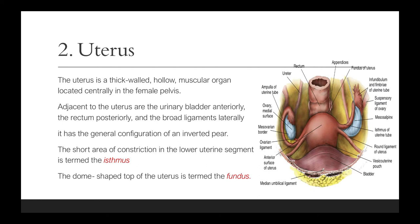Next, we have the uterus. The uterus is a thick-walled, hollow, muscular organ located centrally in the female pelvis. Adjacent to the uterus is the urinary bladder anteriorly, the rectum posteriorly, and the broad ligaments laterally. It has the general configuration of an inverted pear.